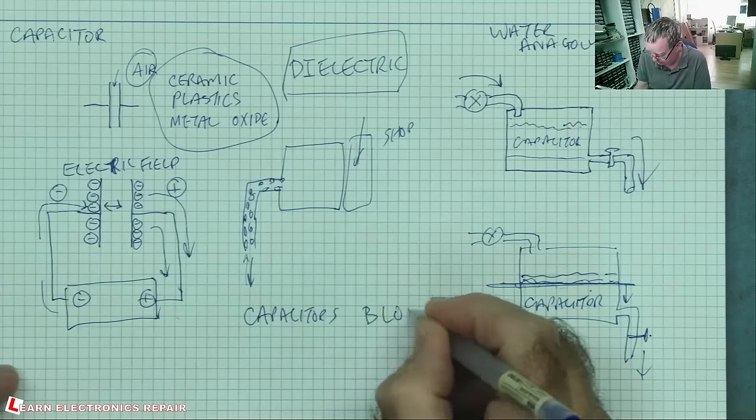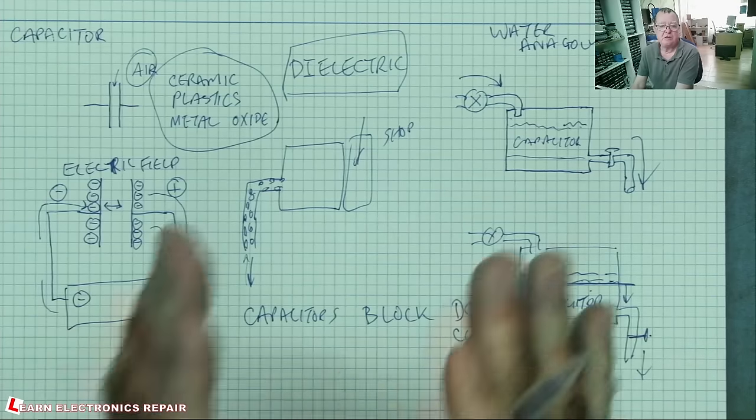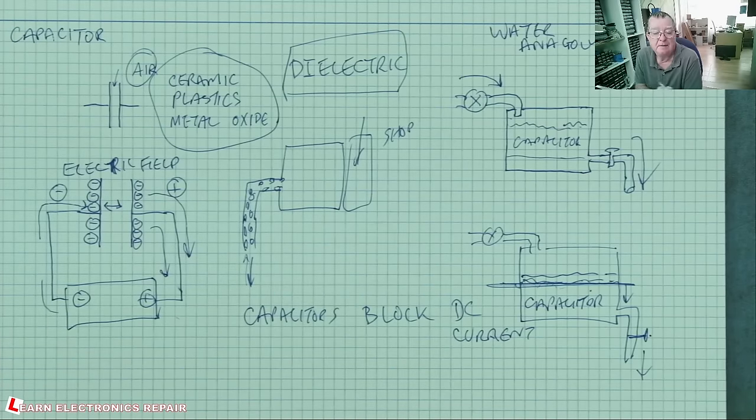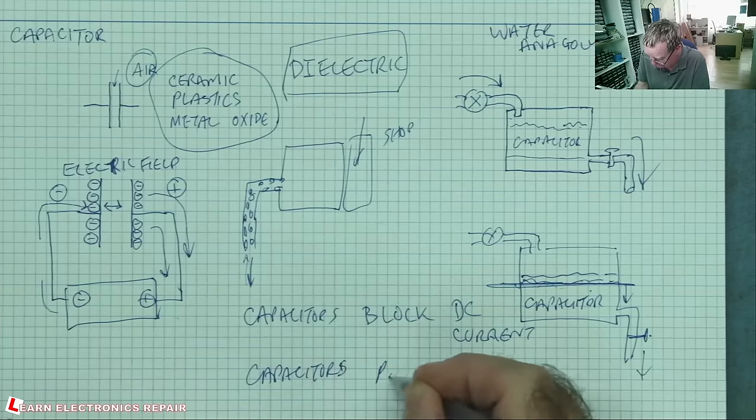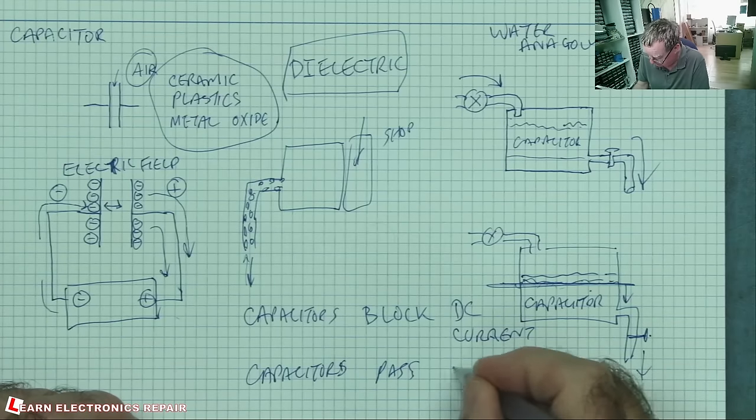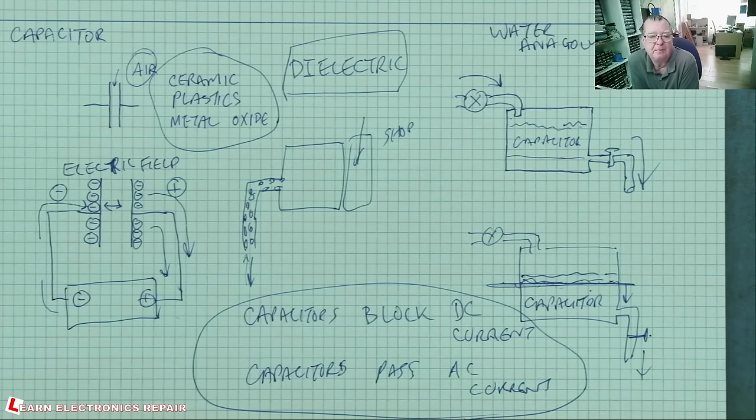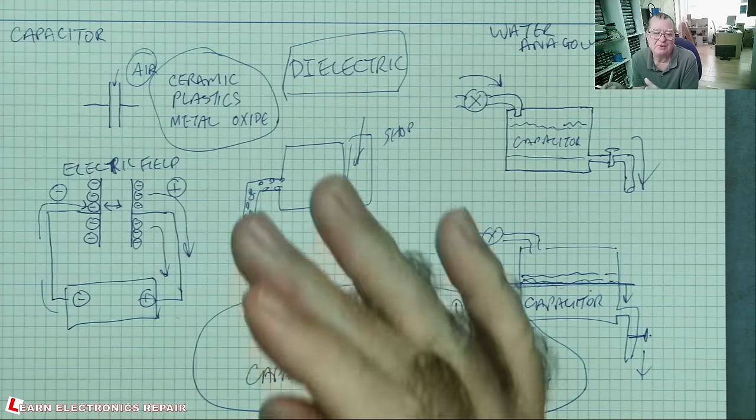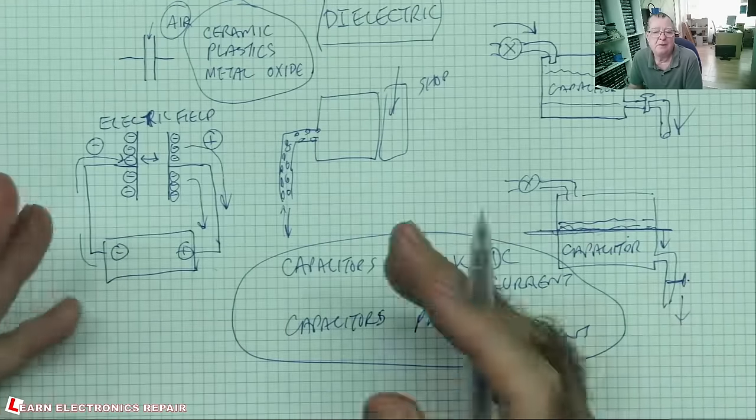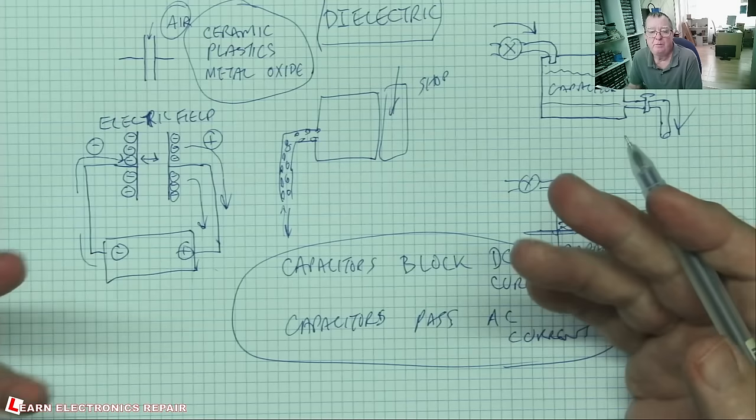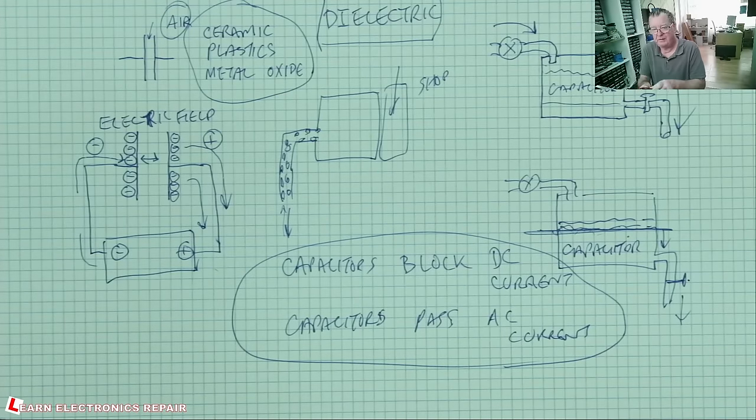No DC current can flow through the capacitor because there's an insulator there. And capacitors will allow AC current to flow. You'll see that that's a basic rule of capacitors, and it's not true. It's not true in the mechanics of what's happening. How do capacitors pass AC? Because if we measure them, that's what they appear to do. They do appear to pass AC.